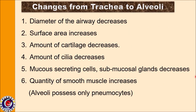From the trachea to the alveoli there are notable changes in the airway. First, there is a decrease in the diameter of the airway passage, and as diameter decreases, surface area increases. The amount of cartilage decreases, as does the amount of cilia lining the epithelial cells. Mucus-secreting cells and submucosal glands also decrease. However, the quantity of smooth muscles increases, and smooth muscles play a very important role in regulation of bronchial diameter. The final division of the respiratory system is the alveoli, which are lined only by pneumocytes.